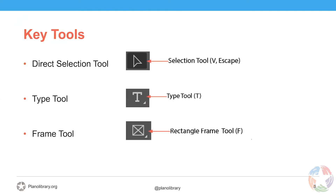Some key tools for InDesign before we shift gears: the direct selection tool — the black arrow — the type tool, and the frame tool. These are the building blocks of all documents you build in the software. It's important to know your fundamentals because you will rinse and repeat a lot in this software.